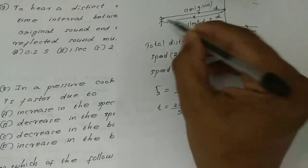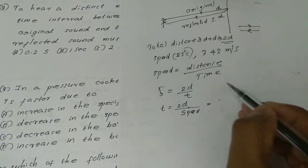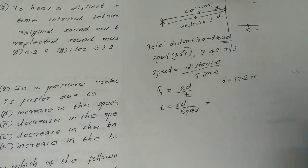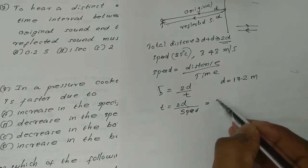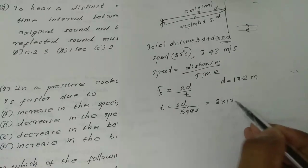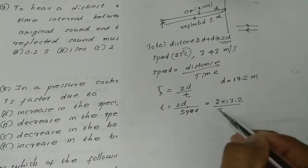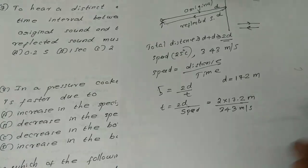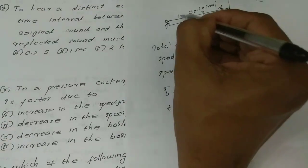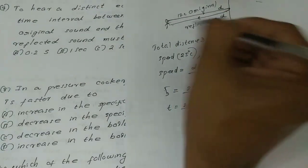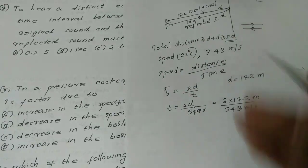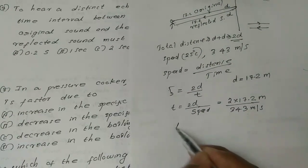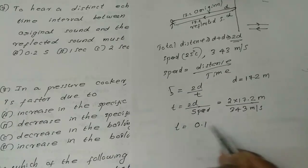The distance d is 14.2 meters. So time = 2 × 14.2 / 340 m/s. This simplifies to approximately 0.1 seconds. Therefore, the answer is Option D: 0.1s.